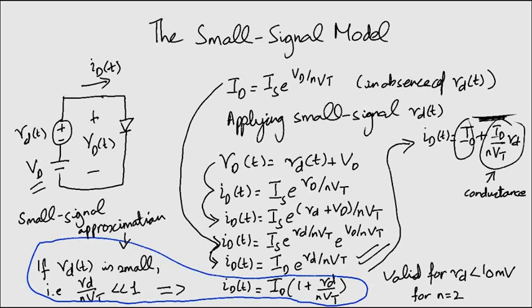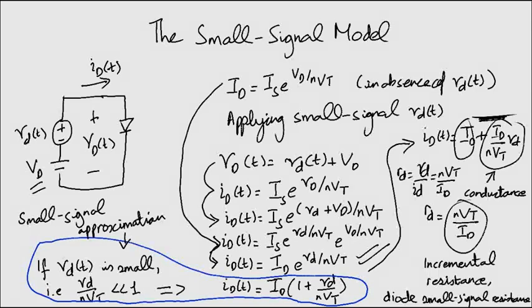This quantity here is a conductance. The inverse of it is RD, the inverse of the slope of tangent in the characteristic curve and it is given by this expression. This is also known as an incremental resistance and diode small signal resistance. We can replace the diode by this resistance in our analysis.